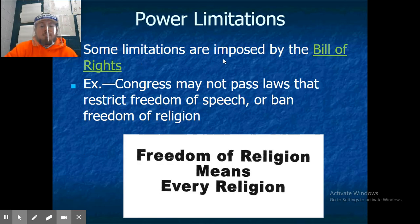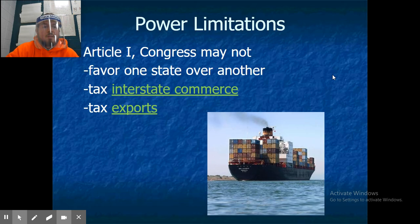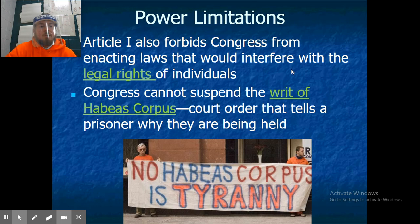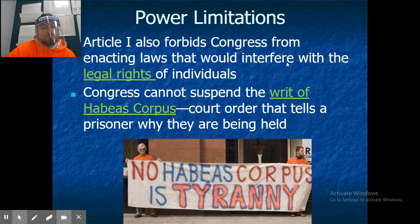Power limitations: some limitations are imposed by the Bill of Rights. For example, Congress may not pass laws that restrict freedom of speech or ban freedom of religion. Article 1 states Congress may not favor one state over another, may not tax interstate commerce or tax exports, and forbids Congress from enacting laws that would interfere with the legal rights of individuals.